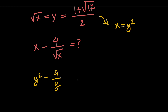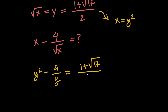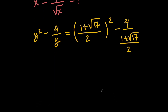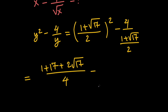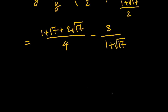Since y equals 1 plus root 17, all divided by 2, our expression becomes 1 plus root 17, all divided by 2, squared, minus 4, over 1 plus root 17, all divided by 2. The first fraction simplifies to 1 plus 17 plus 2 times root 17, all divided by 4, which is 18 plus 2 times root 17 over 4. Dividing top and bottom by 2, this simplifies to 9 plus root 17 divided by 2. The second fraction becomes 8 over 1 plus root 17.